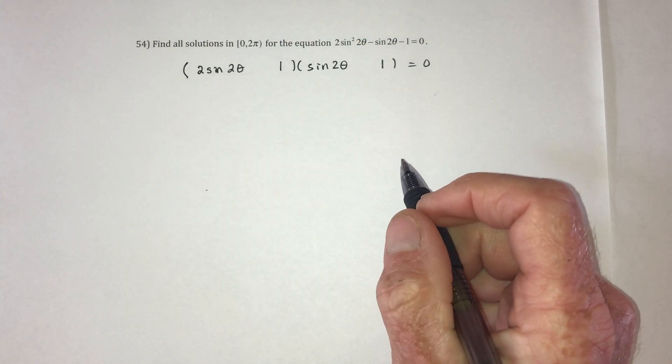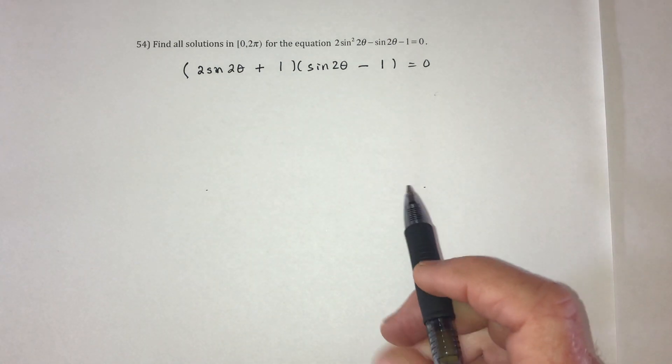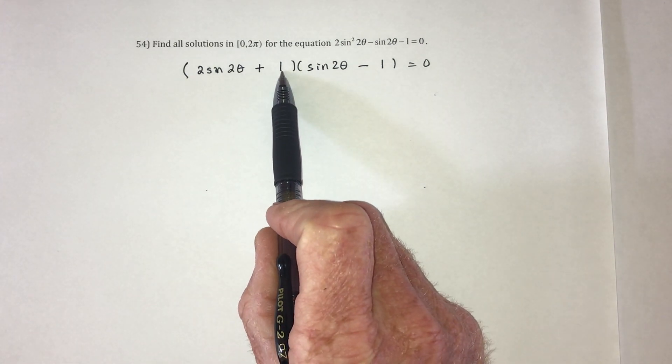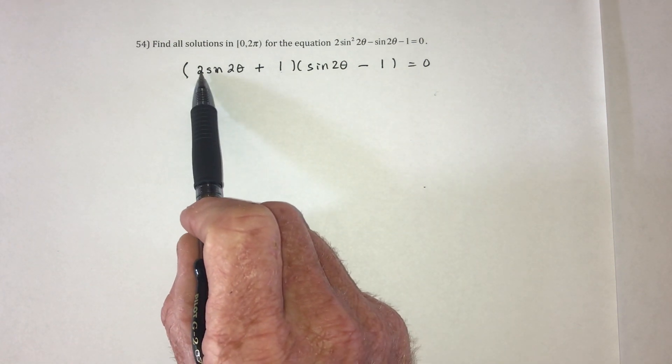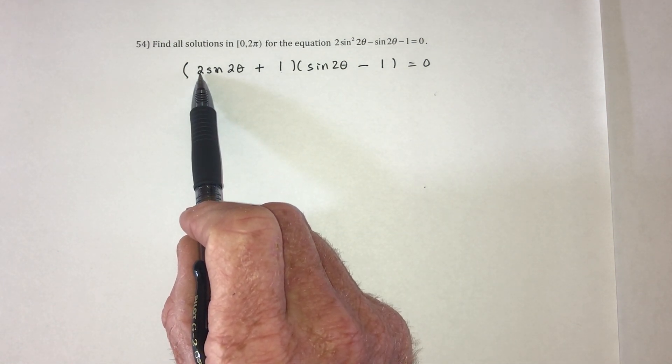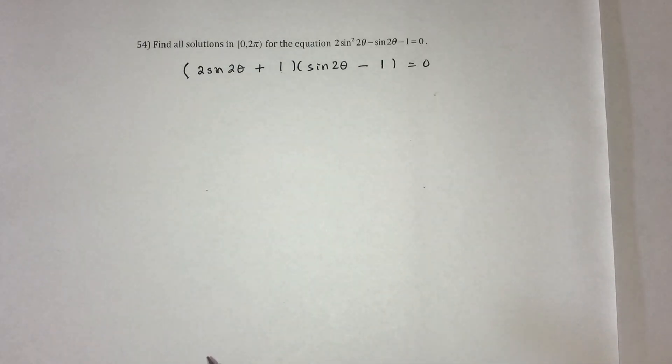And one of them needs to be positive and one of them needs to be negative. So I'm going to guess that it goes positive and then negative. Let's see if that works for the middle term. This would be 1 sine of 2 theta and then this would be minus 2 sine of 2 theta, which would leave behind negative sine of 2 theta. So it worked.